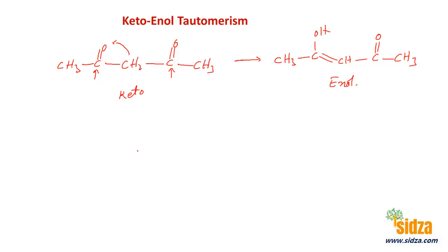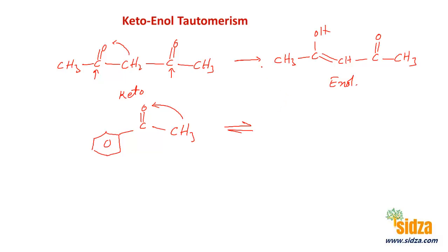Another example: benzene attached to a C=O and a CH3 group — this is acetophenone. One of the hydrogens from the alpha carbon will shift to the oxygen. You then get benzene attached to C(OH)=CH2, forming the enolic form.